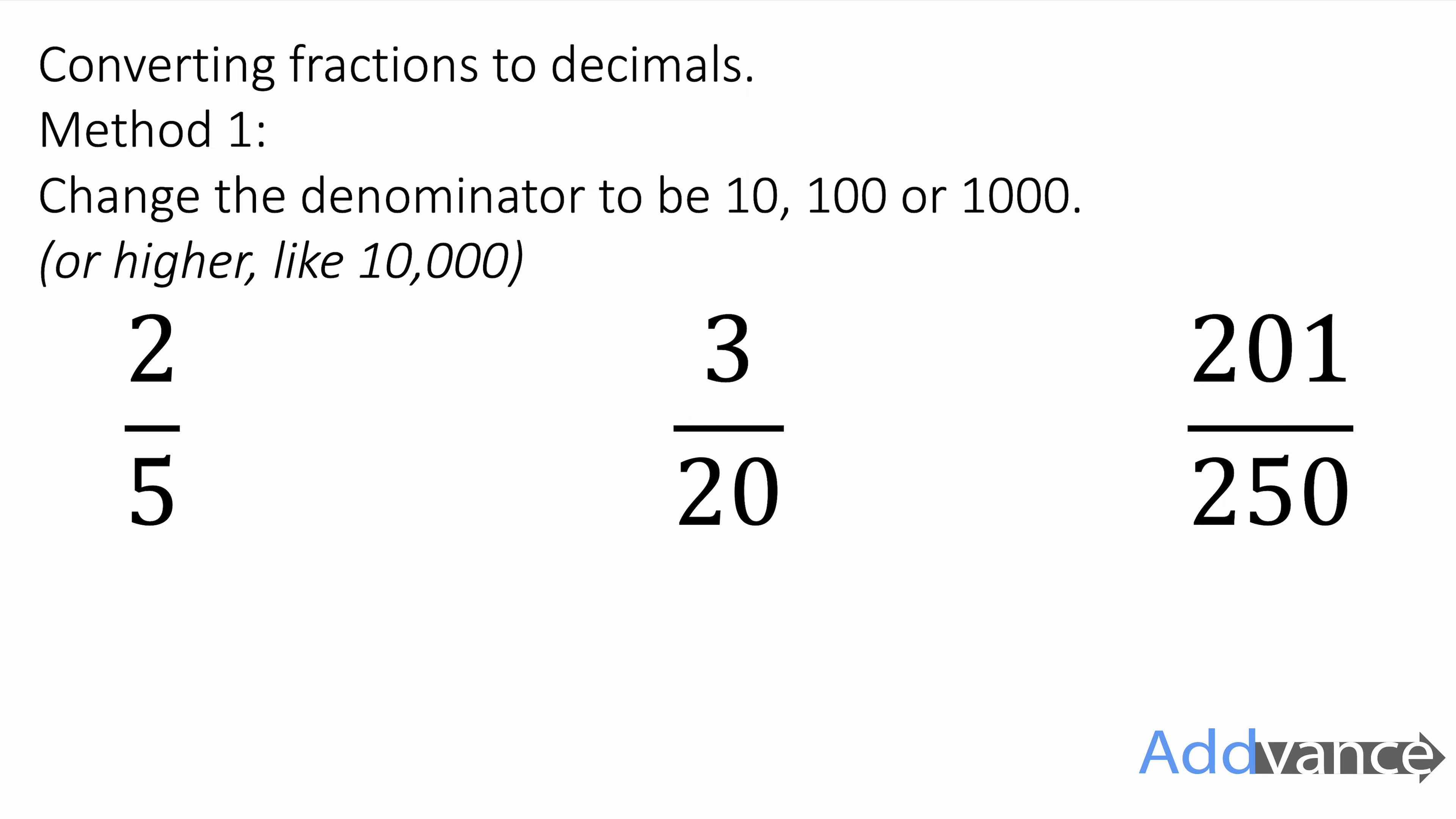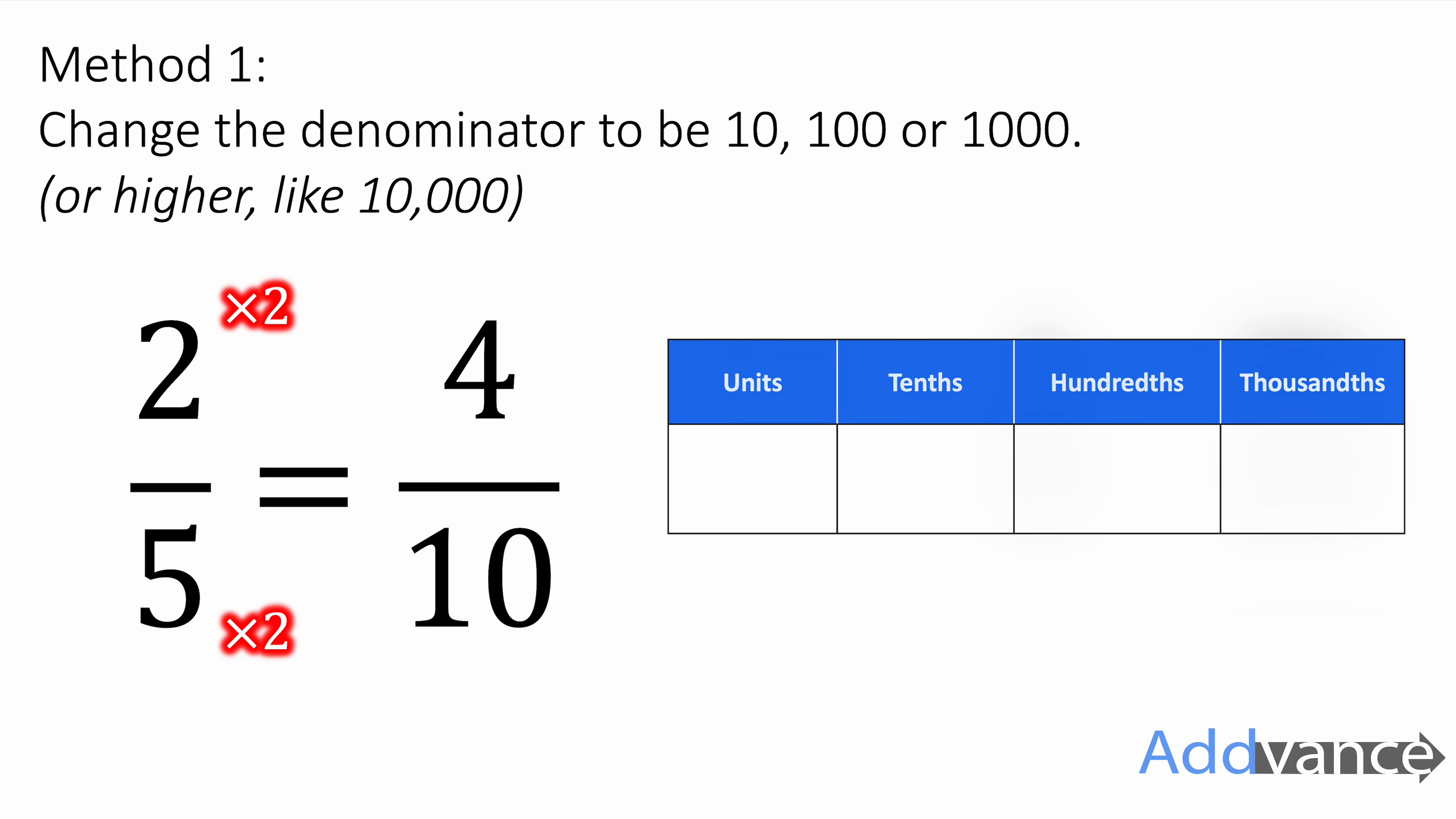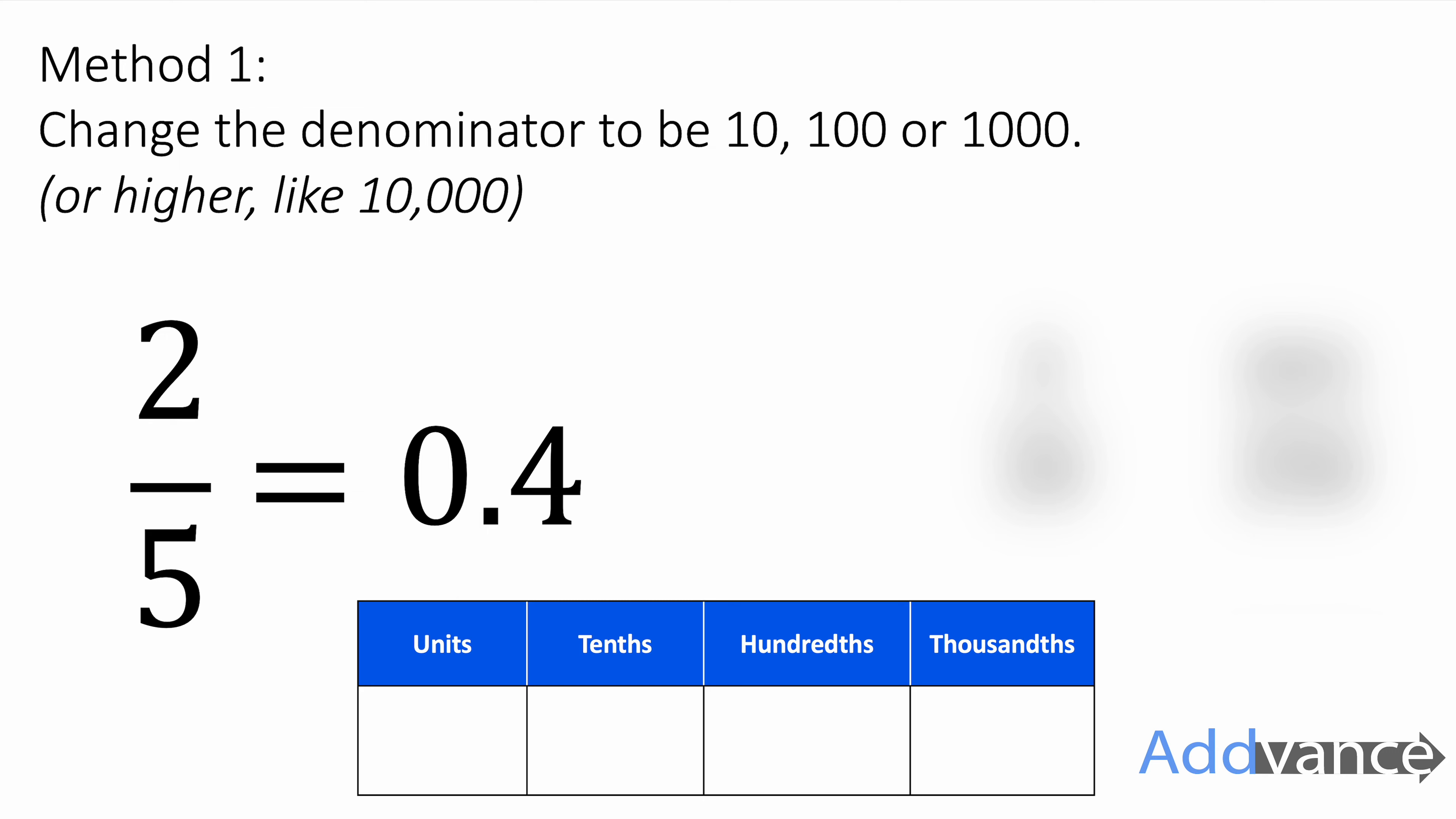For example 5, when it's two-fifths, we can change the denominator to be 10 by times-ing by 2. We get 4 tenths, and that's the same as 0.4 because it's 4 tenths, 4 in the tenths column. So two-fifths is the same as 0.4, and we've converted that fraction into a decimal.